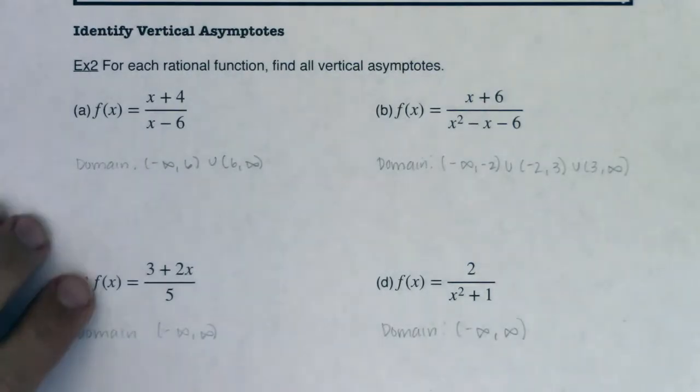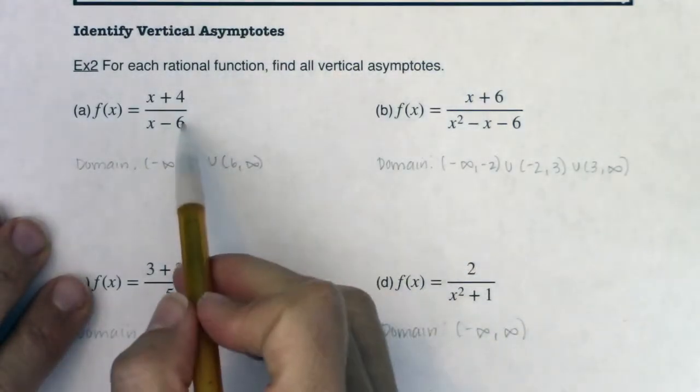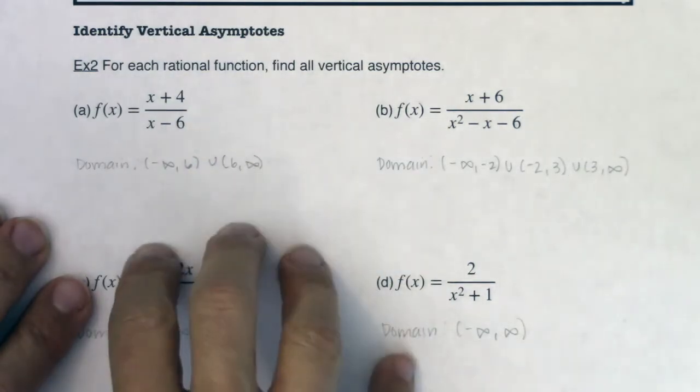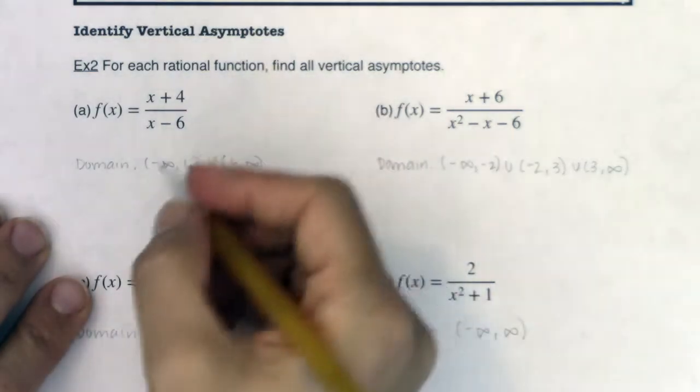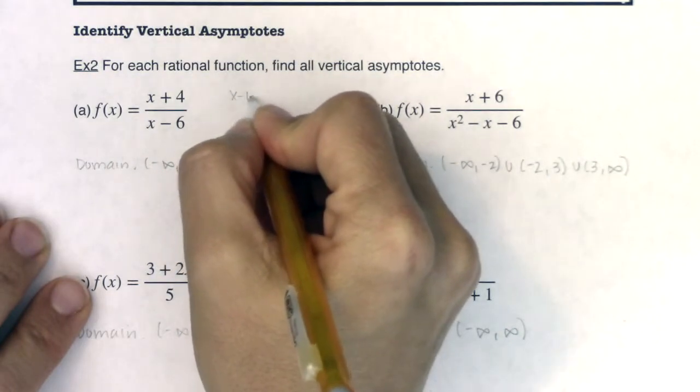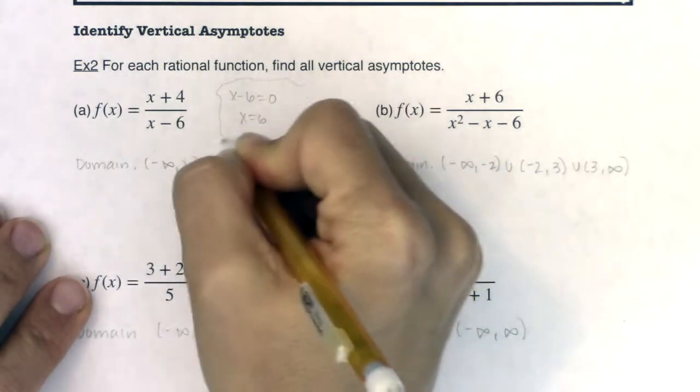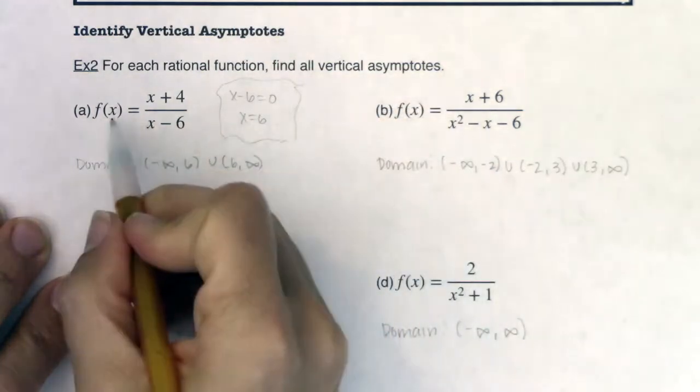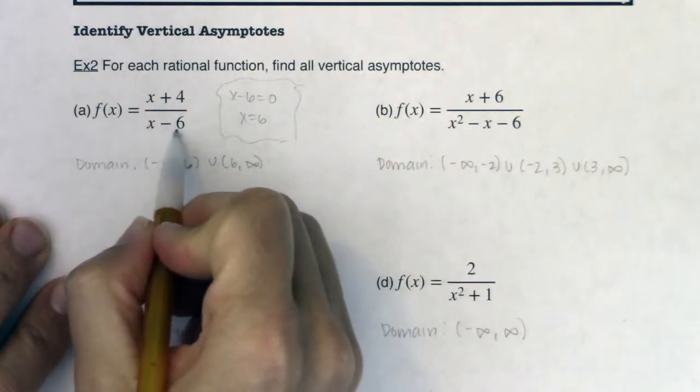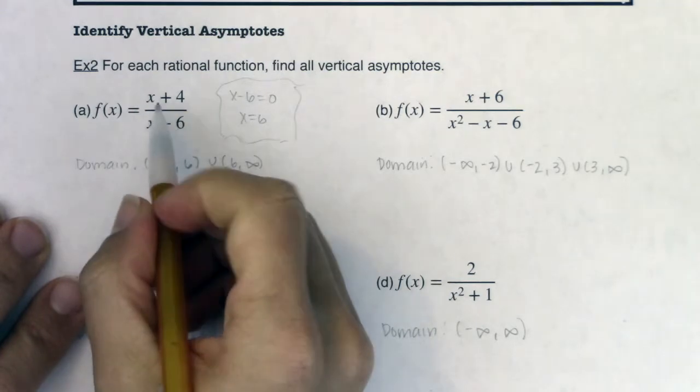All right, so how this works, if we can find a number that zeros out only the denominator, we're going to have a vertical asymptote. So now when I set my denominator equal to zero here, I got x equaling six. That was the work we did on the first page. All right, we know when we plug in six, it zeros out my denominator. What happens with my numerator?